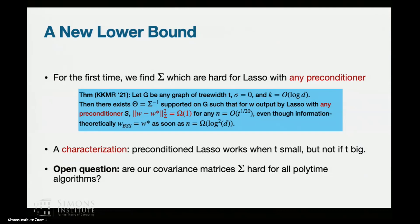So we know if we just look at graph structure, actually tree width just totally characterizes when preconditioned LASSO can and cannot work. And that's a very natural algorithmic approach. LASSO is our favorite approach, basically, to solve sparse linear regression. So it's possible that these covariance matrices are hard for all polynomial time algorithms. But we just don't know.